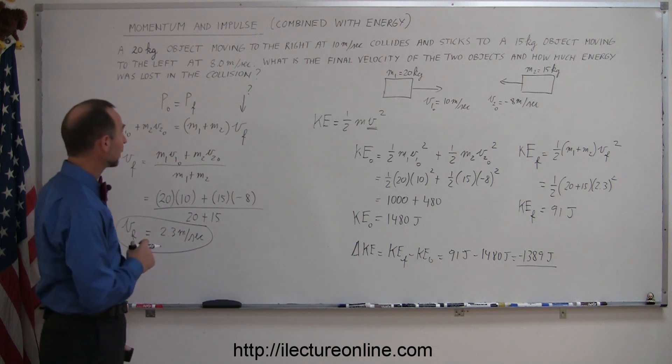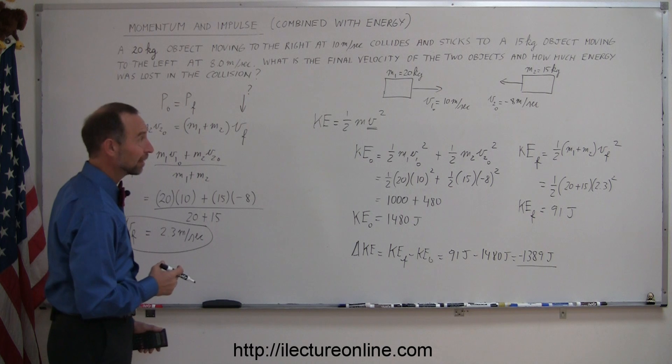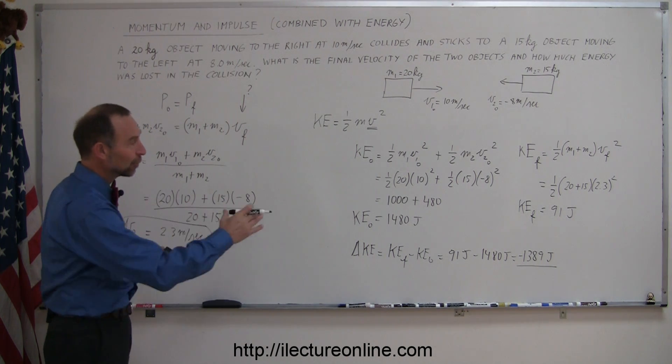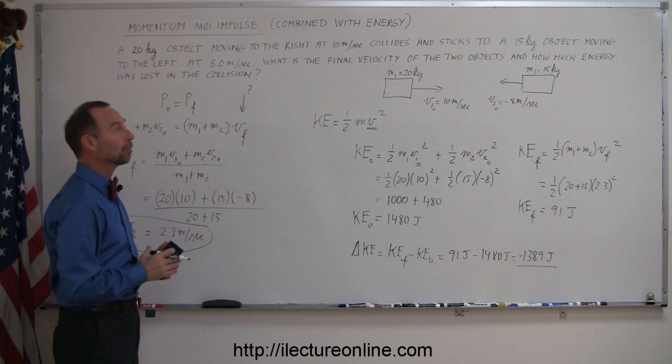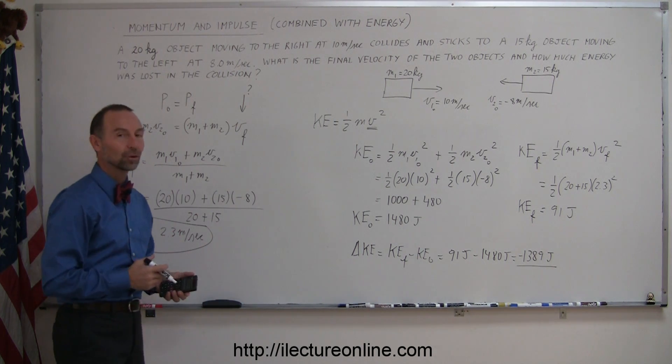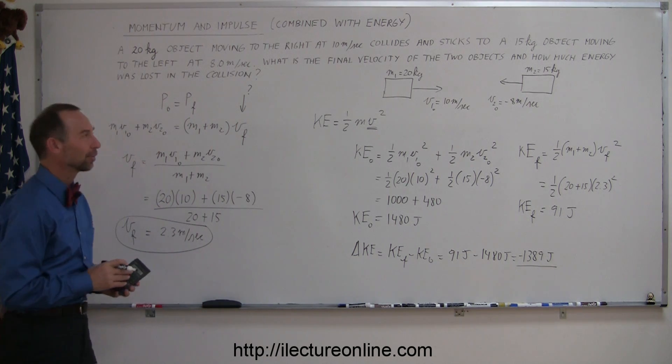So we lost almost 1,400 joules in the collision. Almost all the energy was lost. Where did that energy go? Well, it turns out, if you actually did an experiment like this, and the blocks did stick together and moved to the right, they would be a little bit warmer, because all that energy would have been converted to heat, and then the heat would have been stored in those two blocks. Alright, that's how you do one of those types of problems.